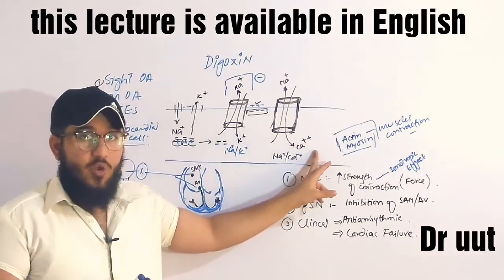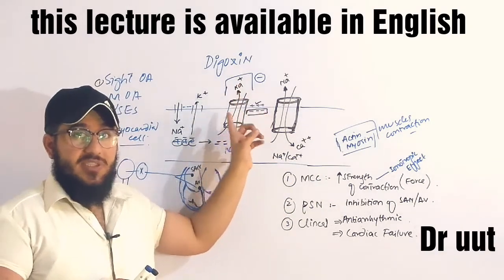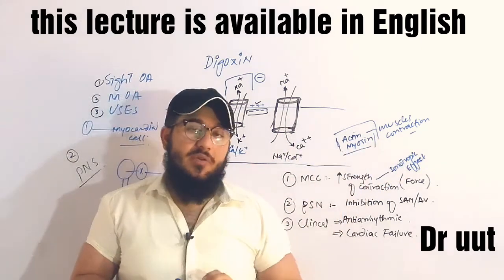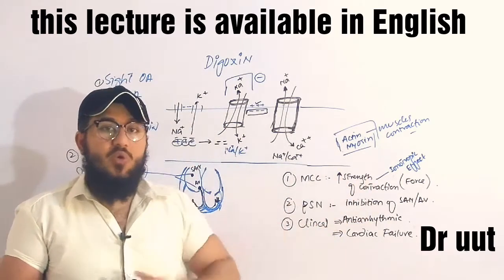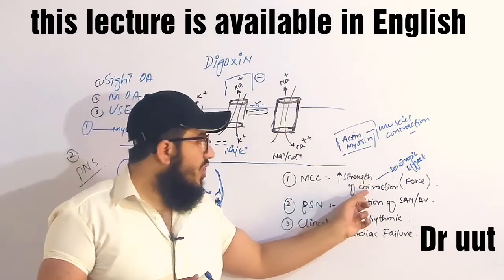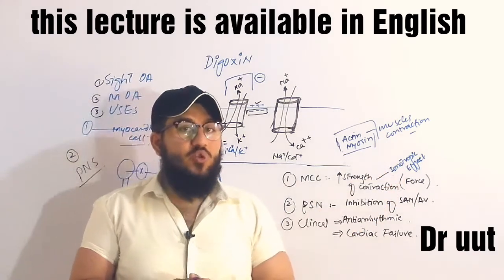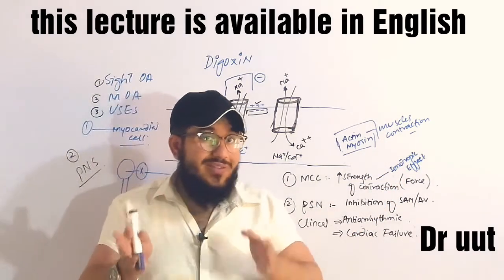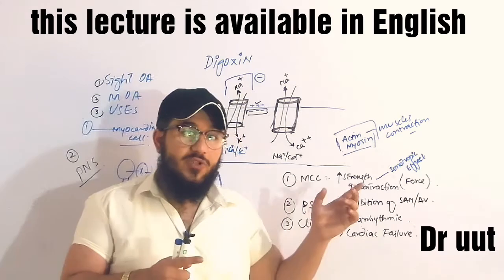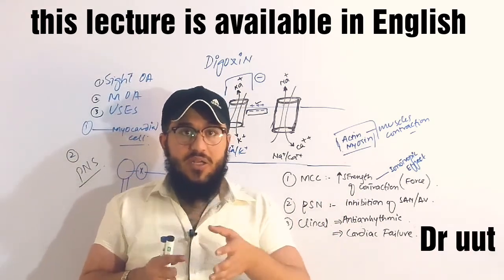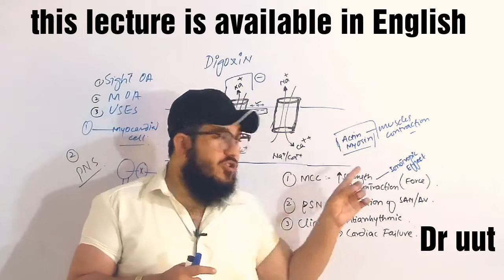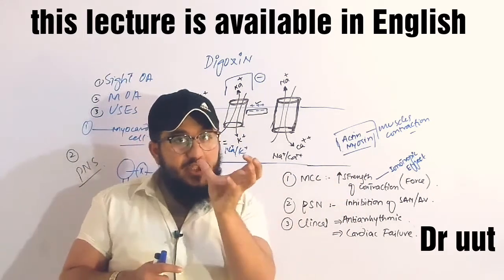In cardiac failure, the heart's pumping function is lost. Digoxin is used here because, by inhibiting the sodium-potassium ATPase pump, calcium concentration in the myocardial cell increases, which increases the strength of contraction of the heart.